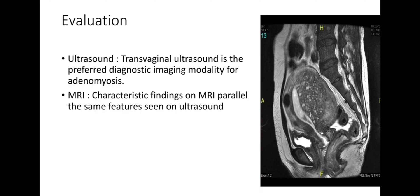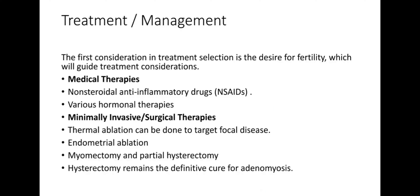Transvaginal ultrasound is the preferred diagnostic imaging modality for adenomyosis, allowing visualization of endometrial infiltration, smooth muscle proliferation, and vascularity via color Doppler. On MRI, characteristic findings parallel those seen on ultrasound — including uterine enlargement characterized by ill-defined low signal intensity regions within the junctional zone, reflective of smooth muscle hyperplasia, and myometrial cysts reflecting regions of ectopic endometrial tissue. Contrast-enhanced MRI is not required for diagnosis.